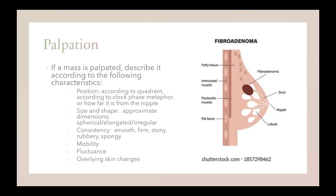If a mass is palpated, describe it according to the following characteristics: position; size and shape; consistency, whether it's smooth, firm, stony, rubbery, or spongy; mobility; fluctuance; and overlying skin changes.